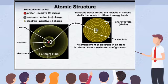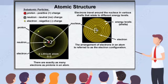Electron configurations can be determined from the periodic table, as you'll learn shortly. The periodic table arranges elements by a sequentially increasing number of protons, and the elements are presented in their atomic, electrically neutral states. Therefore, there are exactly as many negatively charged electrons orbiting the nucleus as there are positively charged protons in the nucleus.